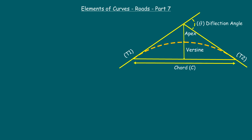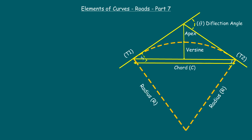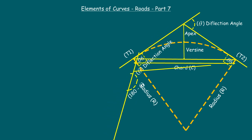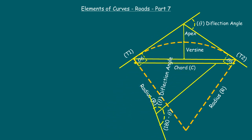These two points are repeatedly asked in public service exams, and they play very important roles in the designing of curves. The angle from the tangent point to the midpoint of the curve is known as the degree of curve. Remember: the radius of a curve is always perpendicular to the tangent line, so the included angle at the center between the two tangent points always equals the deflection angle at the intersection point.